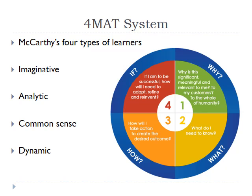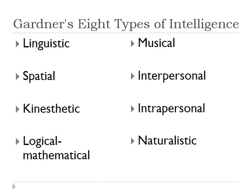The 4MAT system is McCarthy's version. He decided there were four types of learners: imaginative, analytic, common sense, and dynamic. If you figure out where someone falls, you're able to create a lesson plan that's most appropriate for them. You can look this up online and find free tests — the assignment for this chapter may not include a personal 4MAT analysis, but it's worth exploring.